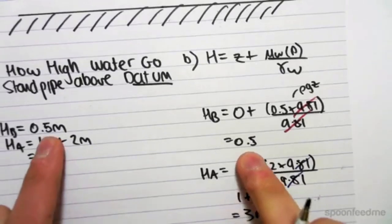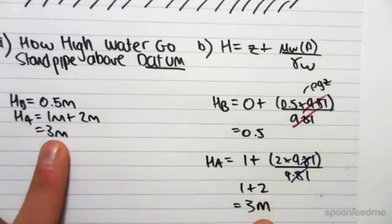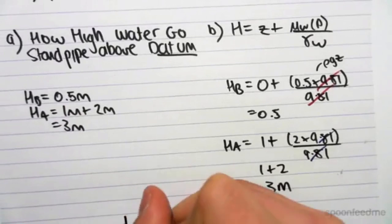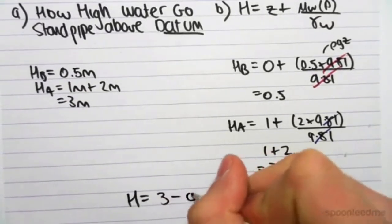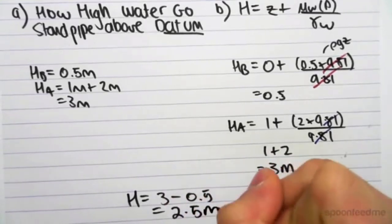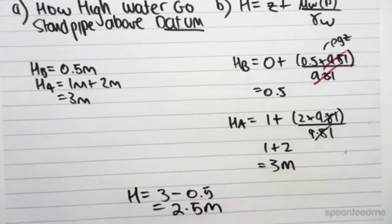We get the exact same answers, 0.5 and 3. And then once again, we could find the total difference in head using even numbers, so 3 minus 0.5, which is 2.5 meters, which is what we got in the previous video.